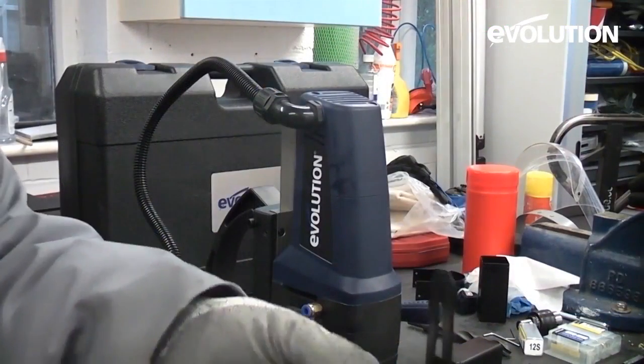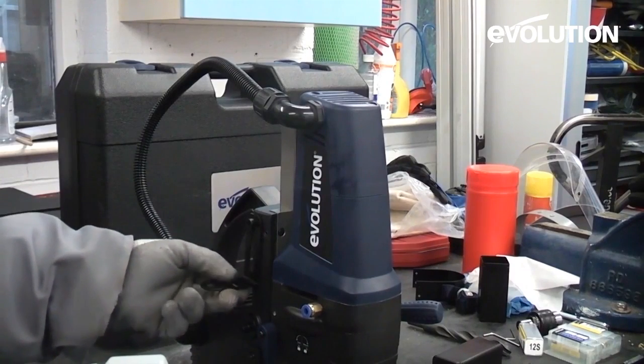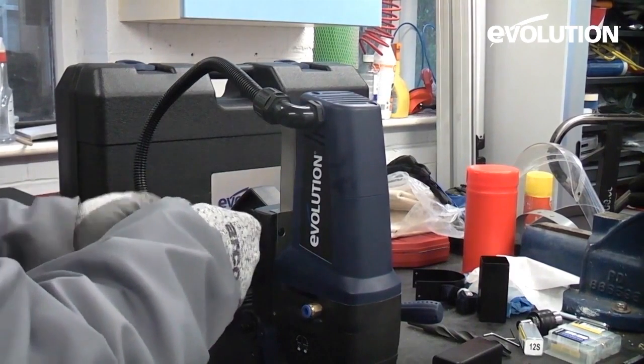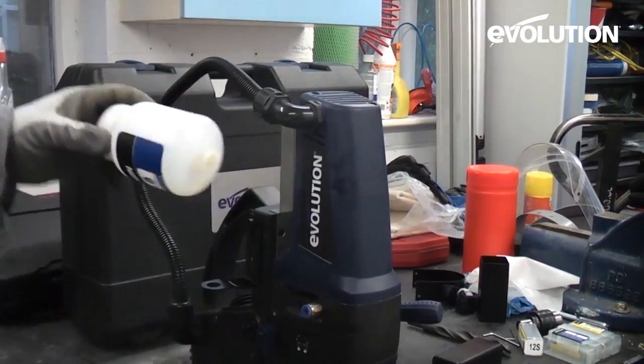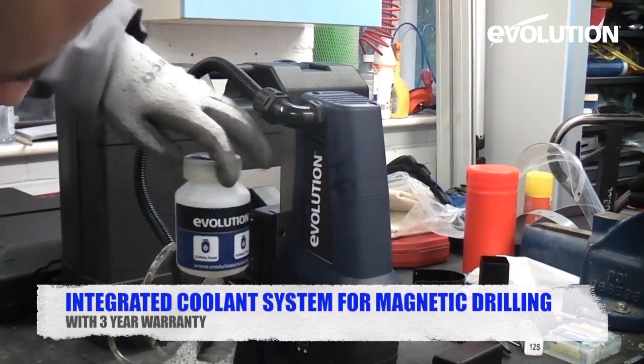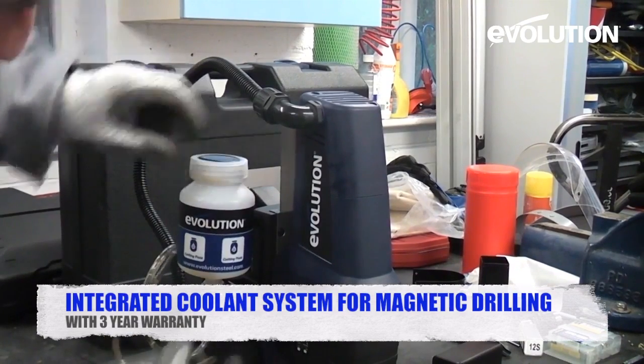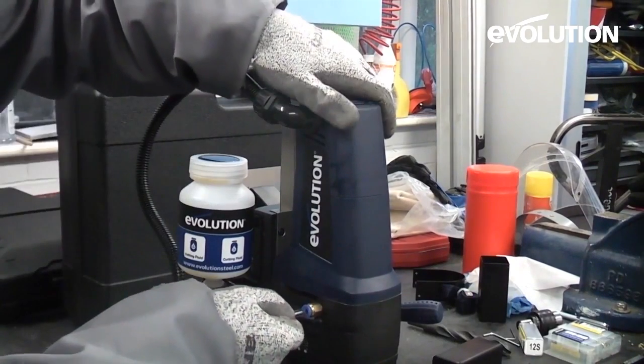To fit the coolant bottle it's very simple. Simply take the bracket, slide that over the cap head screw, just tighten that up where you want it. Take the bottle and the screw-in valve, screw that on there, and simply take that end and push that into the push-fit connector there.